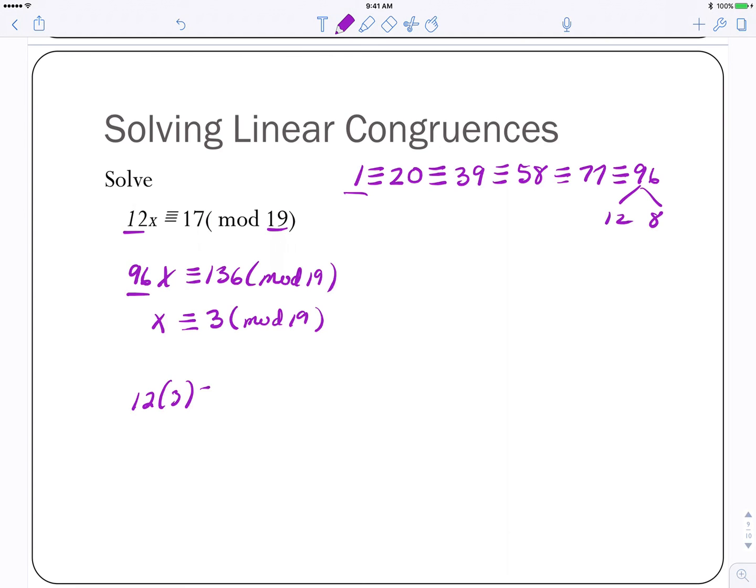We'll check our answer. 12 times 3 is 36. Is that congruent to 17 mod 19? Sure. If you take 36 and subtract 19, you're going to get 17. Correct? So that is the solution. In the next two videos, we'll talk about finding modular inverses and solving these problems that have multiple solutions. I hope that helps and have a great day.